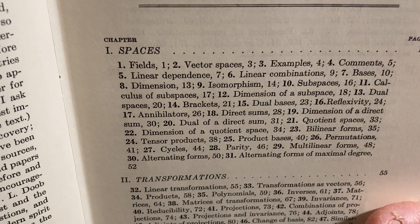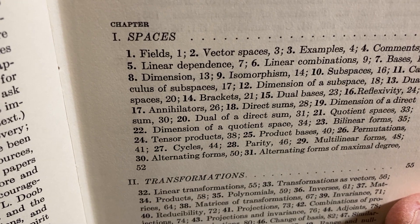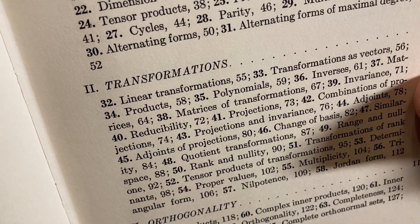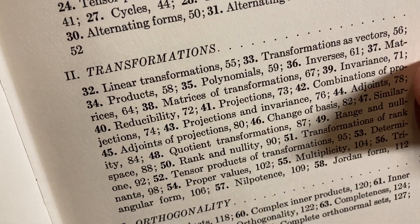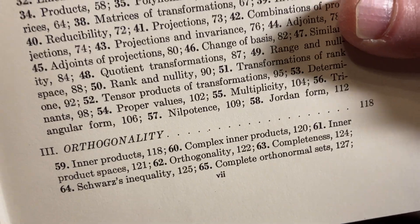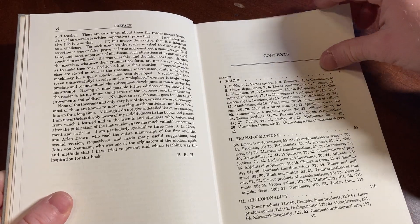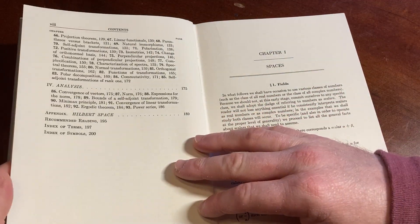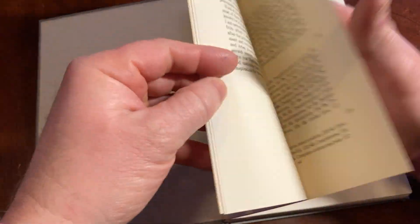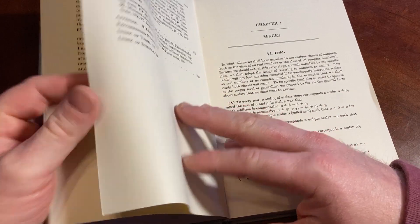Chapter one is on Spaces. And then Transformations. Lots of math here. Orthogonality. Lots of mathematics in a book like this. And then we have Analysis. That's pretty much it. It's not a very thick book — it's a good size, it's got a lot of material, but it's not super thick.